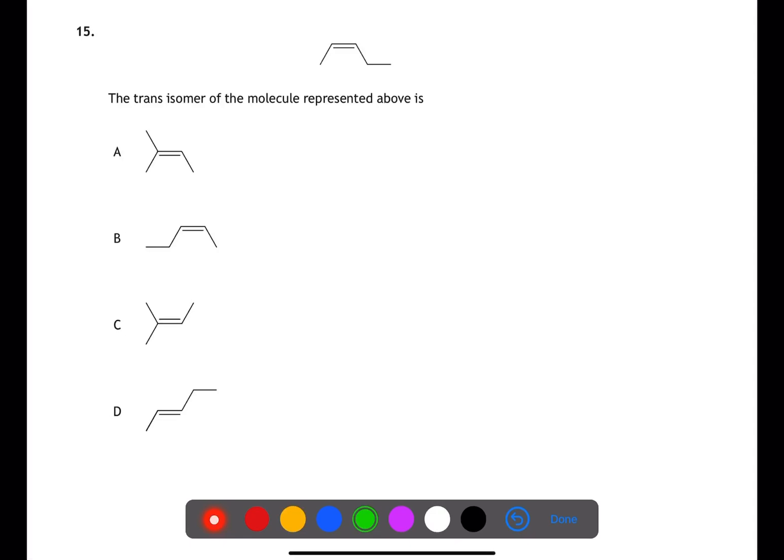In this structure, we have cis-pent-2-ene. This is a cis-isomer because the two branches are on the same side of the double bond. The trans-isomer will have to have the same structure, but on opposite sides of the double bond, giving us D.